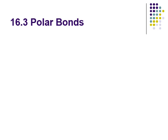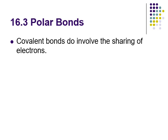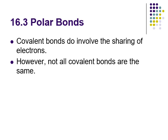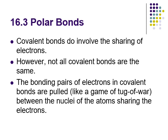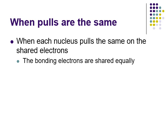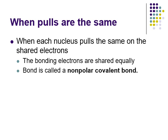Now for polar bonds - the last section of this unit. Covalent bonds are all about the sharing of electrons, but think about sharing: sometimes sharing is equal, sometimes it's unequal. That's the same thing with sharing electrons in covalent bonds - each atom is pulling on those electrons, like in a game of tug of war. When each nucleus pulls equally on the shared electrons, the electrons are shared equally, and we call that a non-polar covalent bond - like a game of tug of war with two equally strong teams.